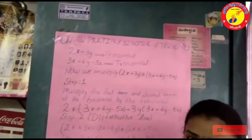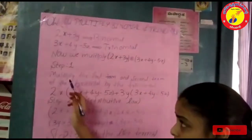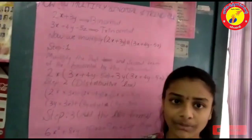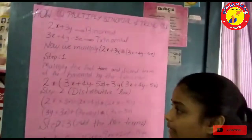There are three steps to multiply binomial and trinomial. Step 1: Multiply the first term and second term of the binomial by the trinomial.